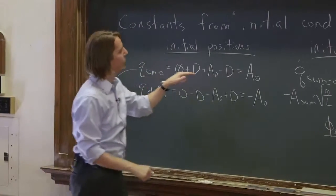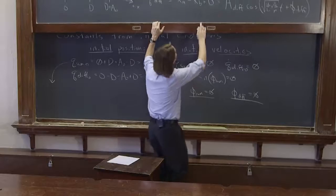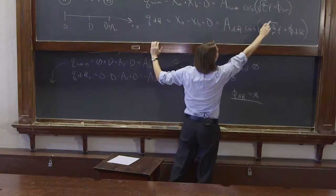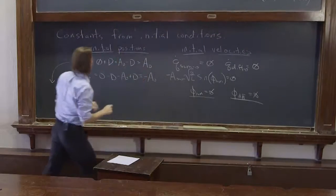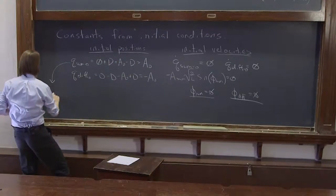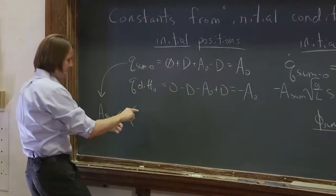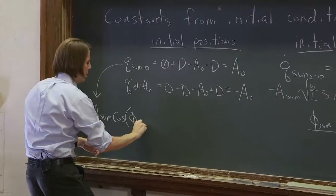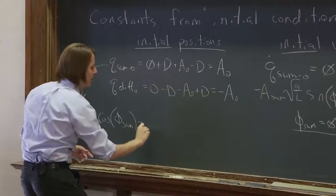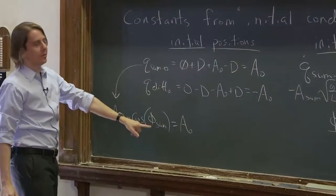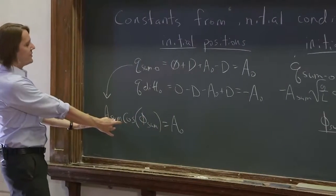q_sum at time 0 equals A_0. So q_sum at time 0 is A_sum cosine of phi_sum, because time is 0. That's A_sum cosine of phi_sum equals A_0. But we just showed that phase is 0. So cosine of 0 is 1, and A_sum equals A_0.